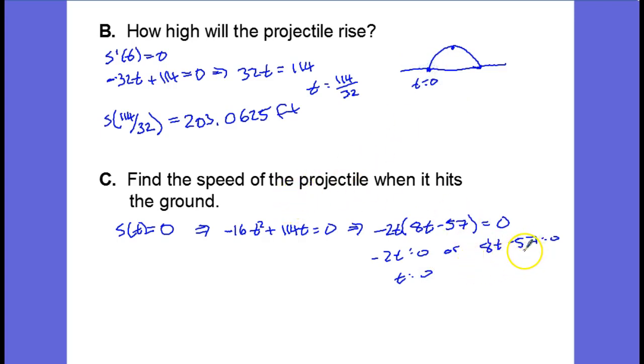This is the one that we're interested in, after it has already traveled when it hits the ground again. We'll get that by taking 8t and setting that equal to 57, and so t equals 57 divided by 8.